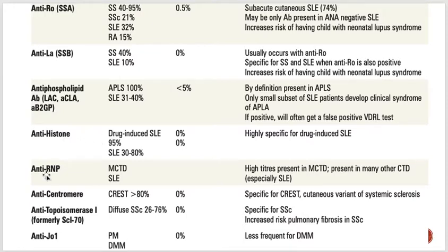Anti-RNP — ribonucleoprotein antibodies: high titers are present in mixed connective tissue disease, or MCTD. They are also present in many connective tissue diseases, especially SLE, but the key association to remember is MCTD. This is an autoimmune-type correlation.